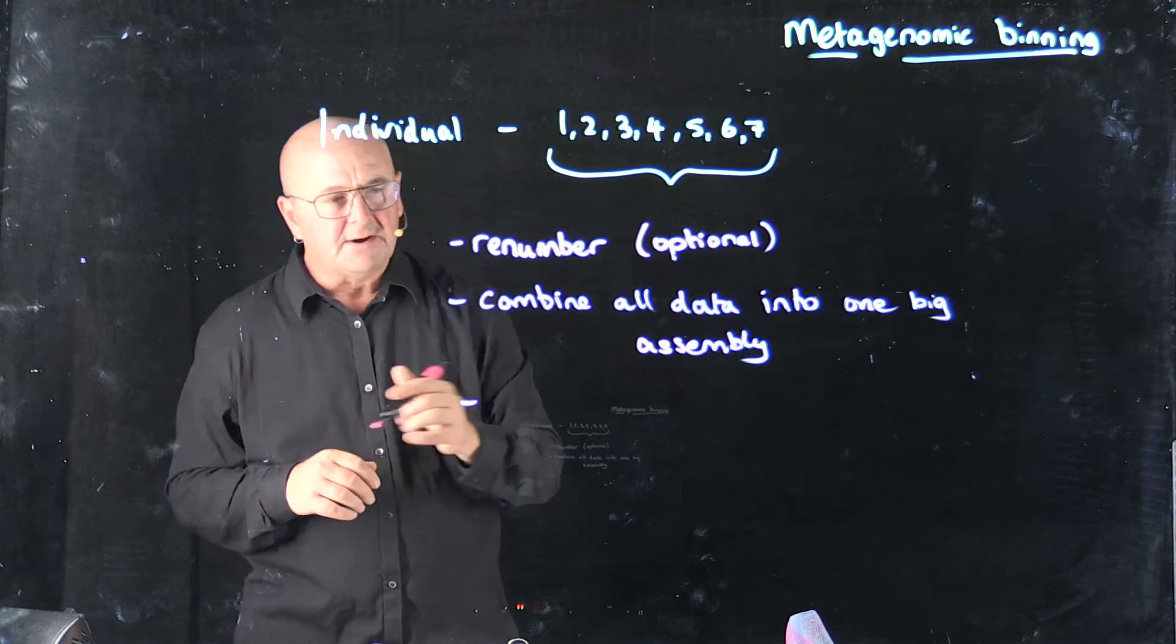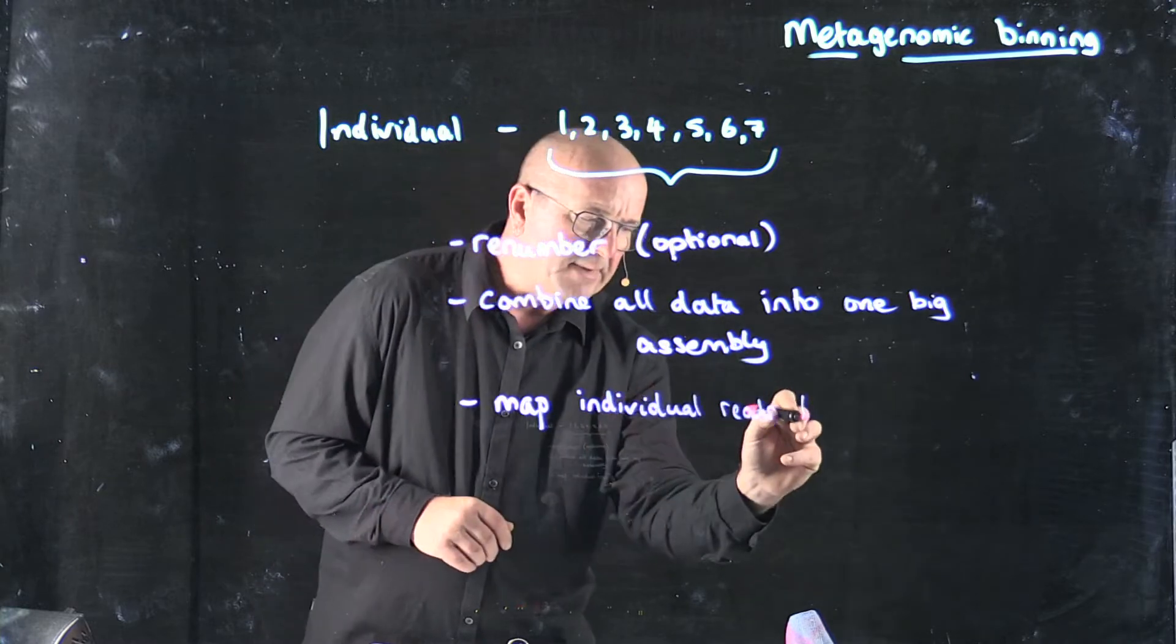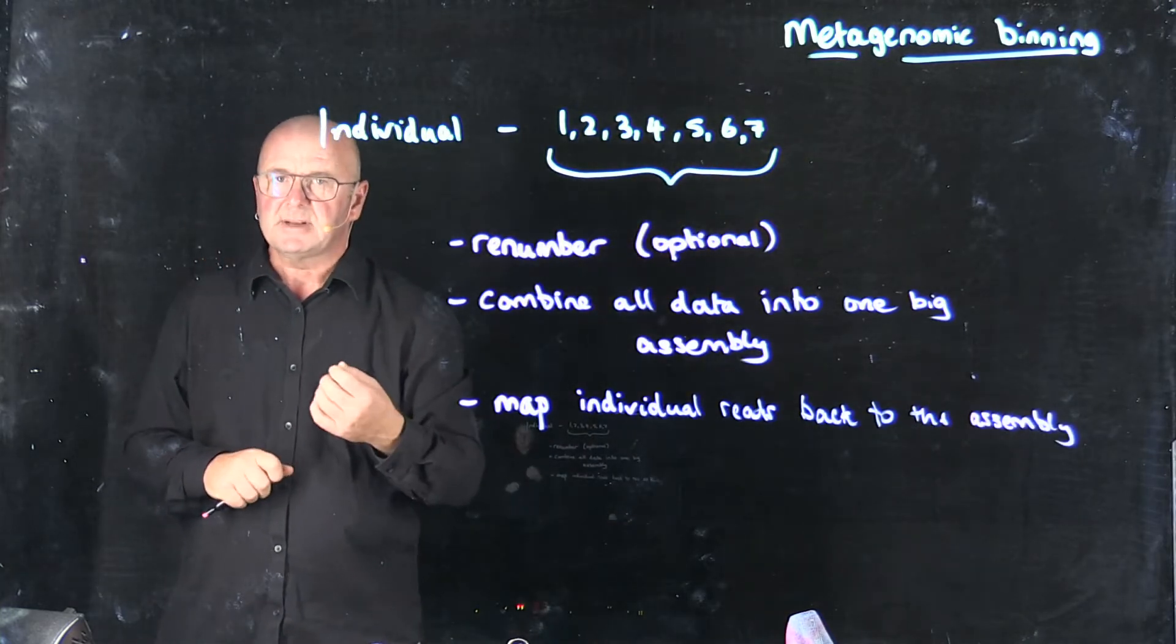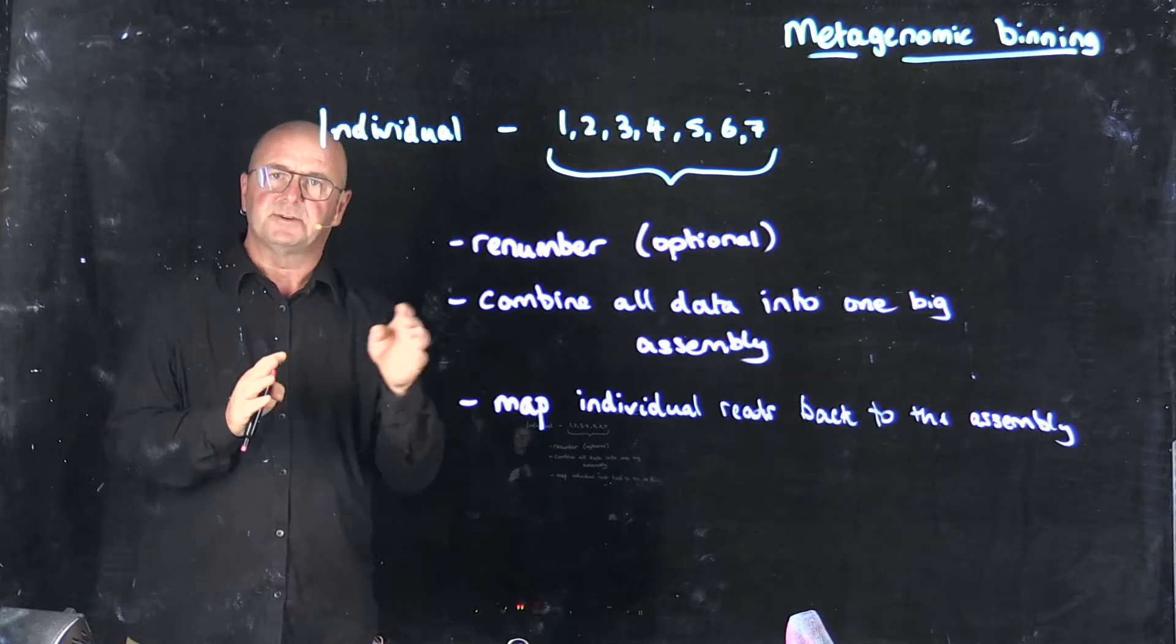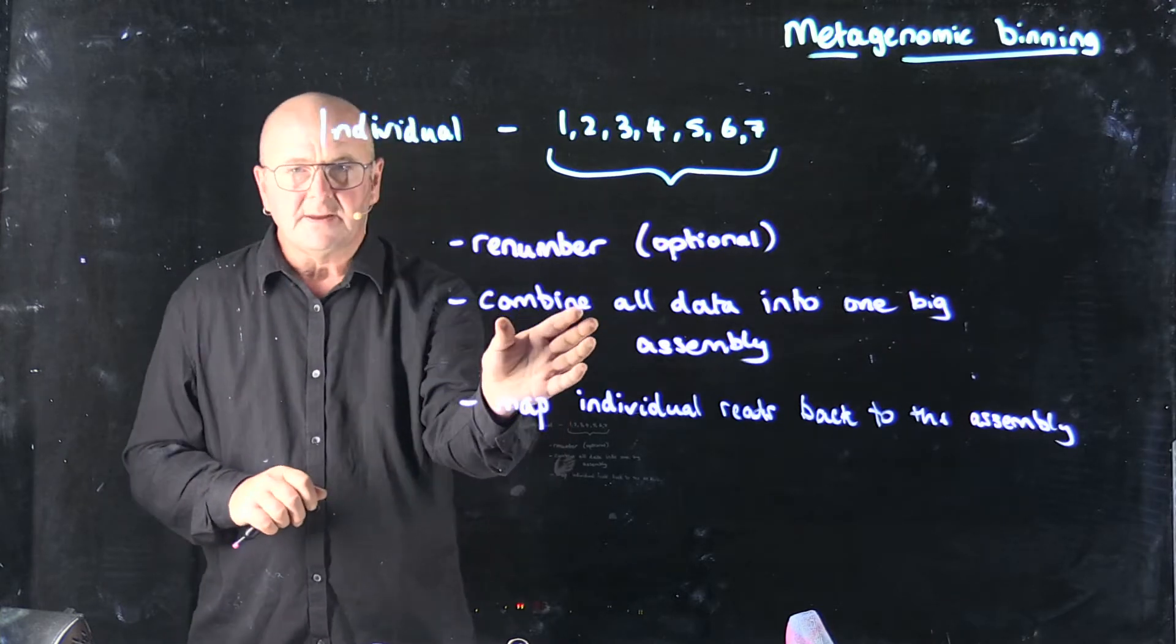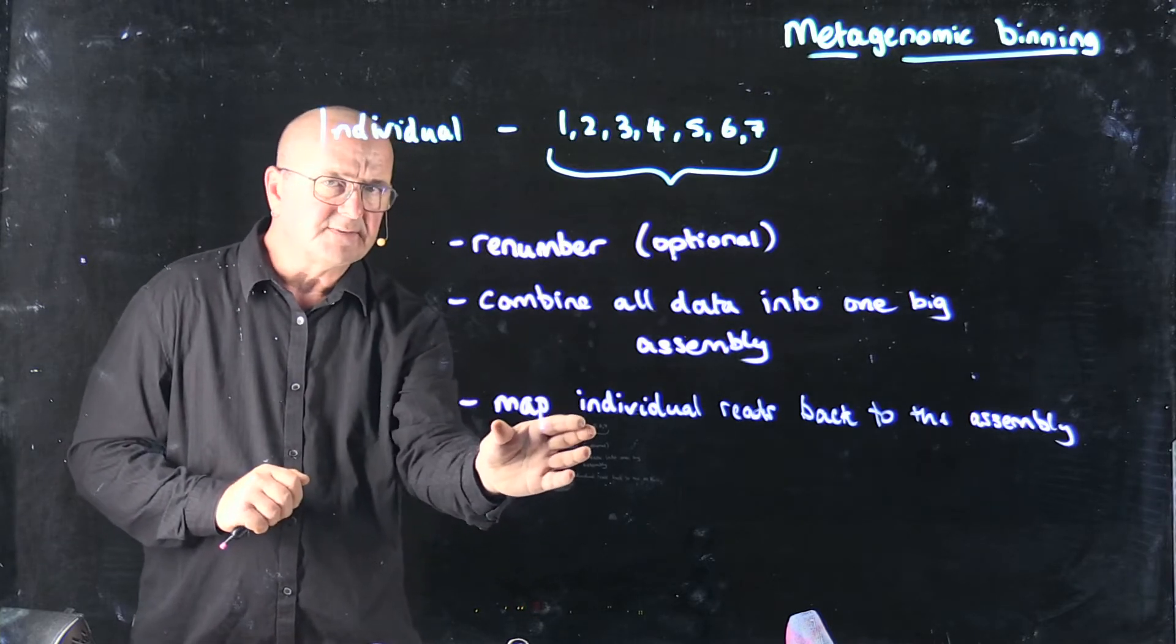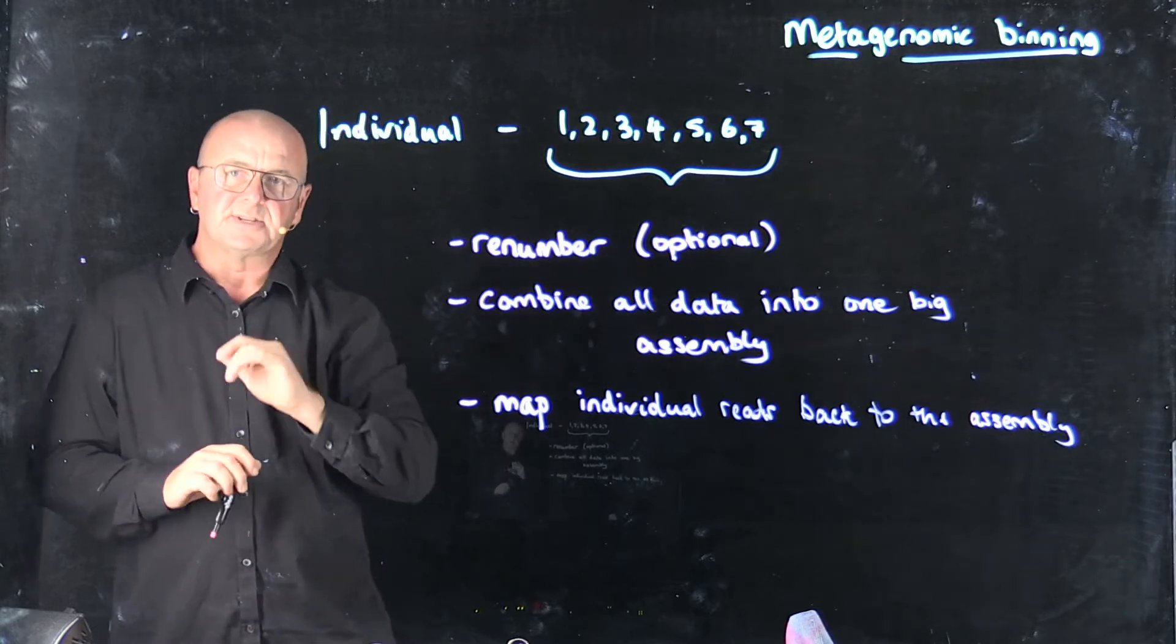Typically, what we do now is we then map the individual reads back to the assembly. And the reason that we have to do that is that the modern assemblers, like spades, don't keep track of which read contributes to which contig. So basically, what we're doing here is we're building contigs out of our metagenomes, and then we're identifying which of the reads from each of these different samples comes back to the contigs that we've built.